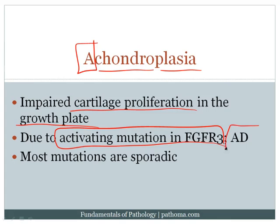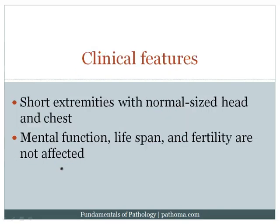Achondroplasia is autosomal dominant. The mutations are related to increased paternal age, and most mutations are sporadic. The result is that patients will have short extremities with a normal-sized head and chest.